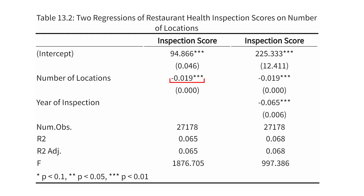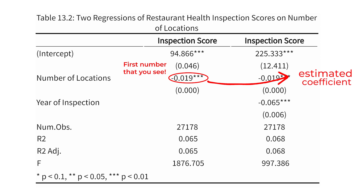Let's focus on the negative 0.019 that we have in that first column. The first number you would typically see in a regression table is the estimate — the estimated coefficient. So if I were to write out a regression of Y equals beta zero plus beta one times number of locations, then this is our estimate of beta one, our beta one hat. We estimate that the slope on number of locations is negative 0.019.